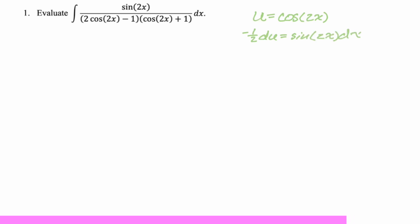Now let's make the substitutions. I'm going to pull out the negative 1/2 and write the integral as negative 1/2 times the integral of 1 over (2u minus 1)(u plus 1) du. There we go.